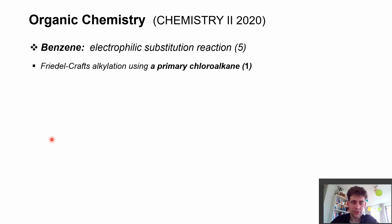Besides the addition of different hetero atom-based groups like the nitro group or sulfonation, we can also introduce alkyl chains to our benzene ring. This is the so-called Friedel-Crafts alkylation.